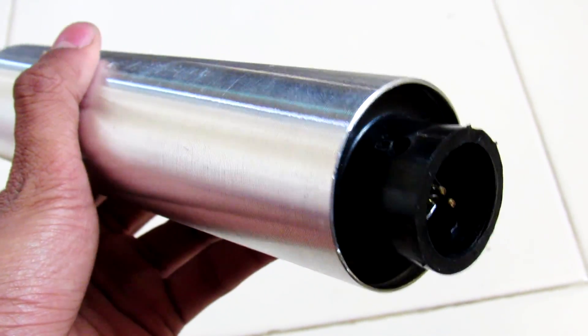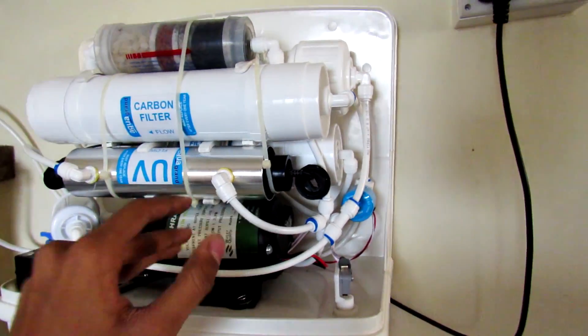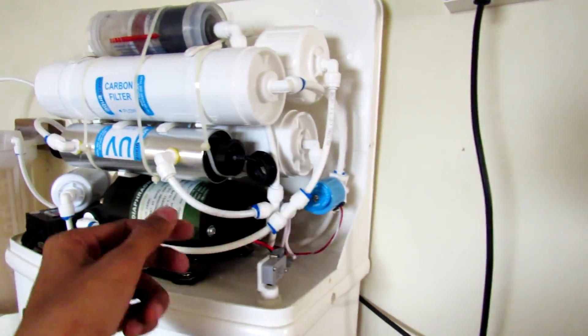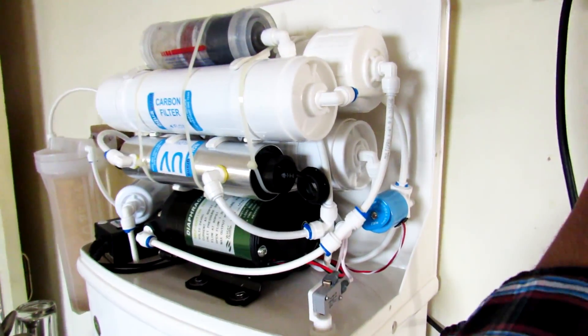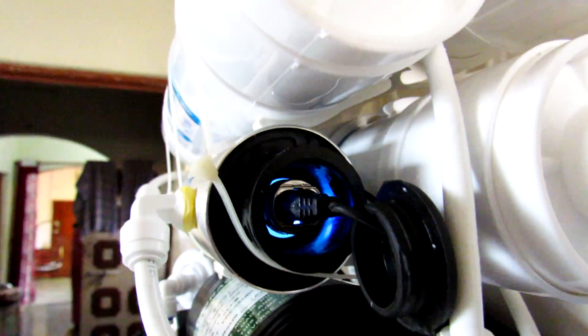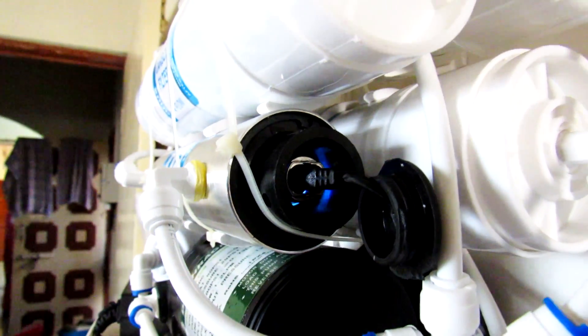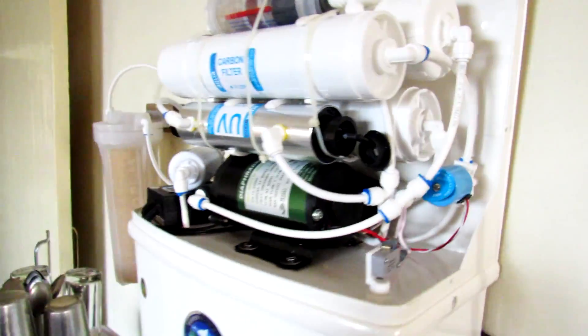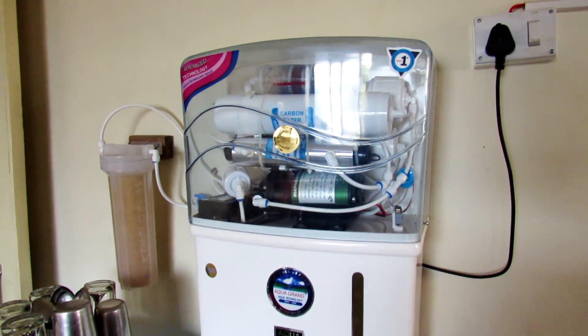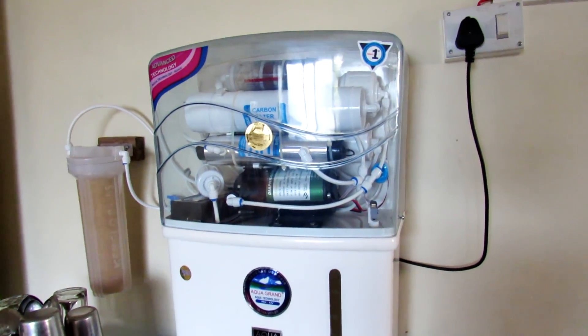Now this UV lamp is installed and everything is connected with water pipes. Let's turn it on. You can see the UV glow is there, and it is working perfectly fine. Hope this video helped you guys, and please hit that like button if your problem is solved. Thanks for watching, goodbye.